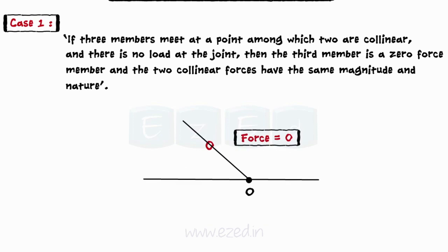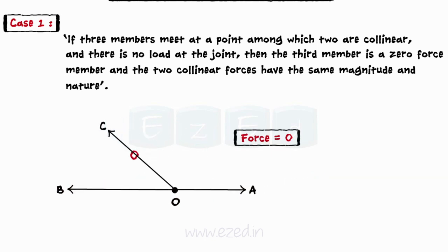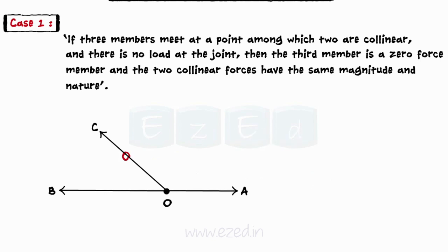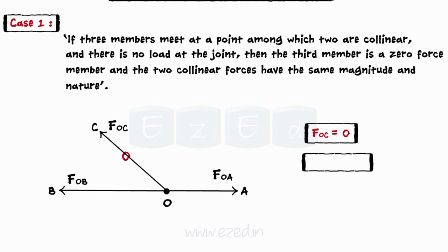For example, consider the joint O formed by three members OA, OB, and OC. Members OA and OB are collinear, and there is no load at the joint. Then, by special case 1, we can conclude that force in member OC is zero, and force in member OA is equal to that in member OB.